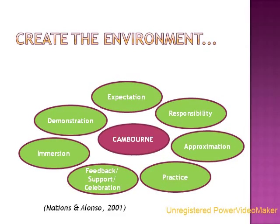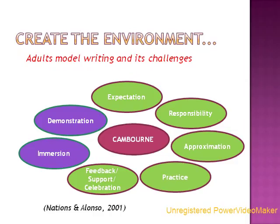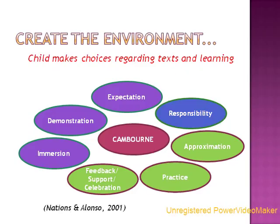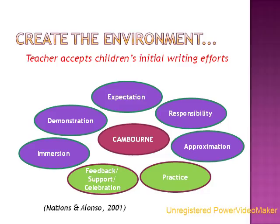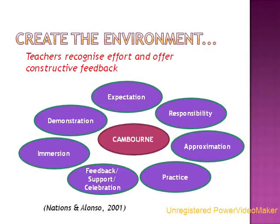During immersion, children are surrounded by written texts such as lists and calendars. In demonstration, adults model writing, showing examples of other people's writing when they read books and other texts, and also sharing their own works in progress and the challenges they are facing with them. Teachers believe every child can learn to write and expect them to do so. At the same time, the teacher is giving each student some responsibility and choice in what they learn. As with speech, perfection will not be achieved immediately, and children's initial approximations must be accepted to help boost their confidence. Writing skills are consolidated with daily practice. Supportive feedback to strengthen weak areas and celebration of achievements are vital to creating an environment conducive to learning.